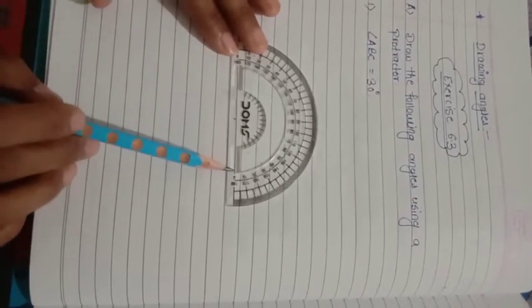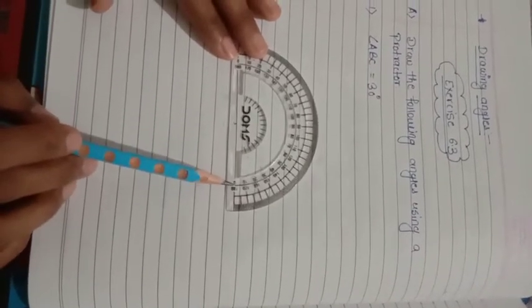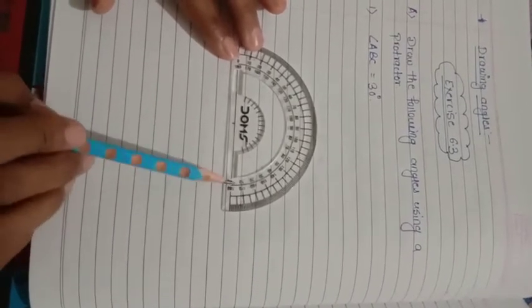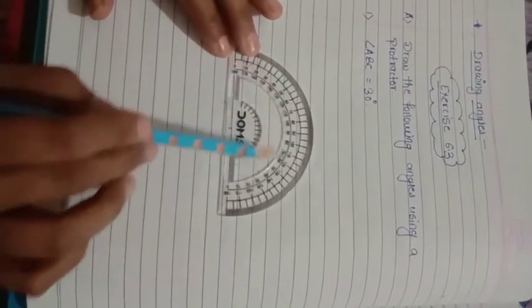This straight edge is called the baseline which represents zero degrees. There are two scales on this protractor: one is inner scale and the other is outer scale.